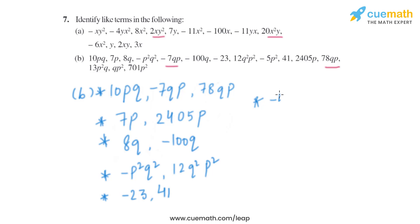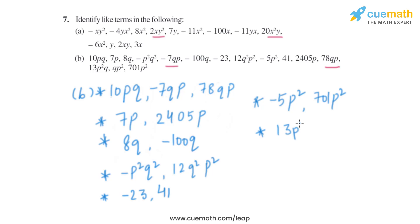The next term is minus 5P square — one variable P with power 2 — and its like term is 701P square, so minus 5P square and 701P square are like terms. Finally, 13P square Q has variables P and Q, with P at power 2 and Q at power 1, and its like term is QP square, so they are like terms.